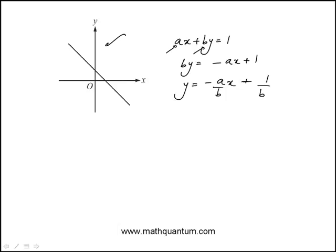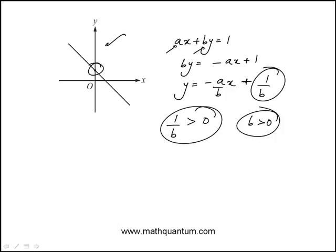So we end up with this form. The first thing is, the y-intercept is positive, which means this piece, 1 over B, is positive. That means B is positive.